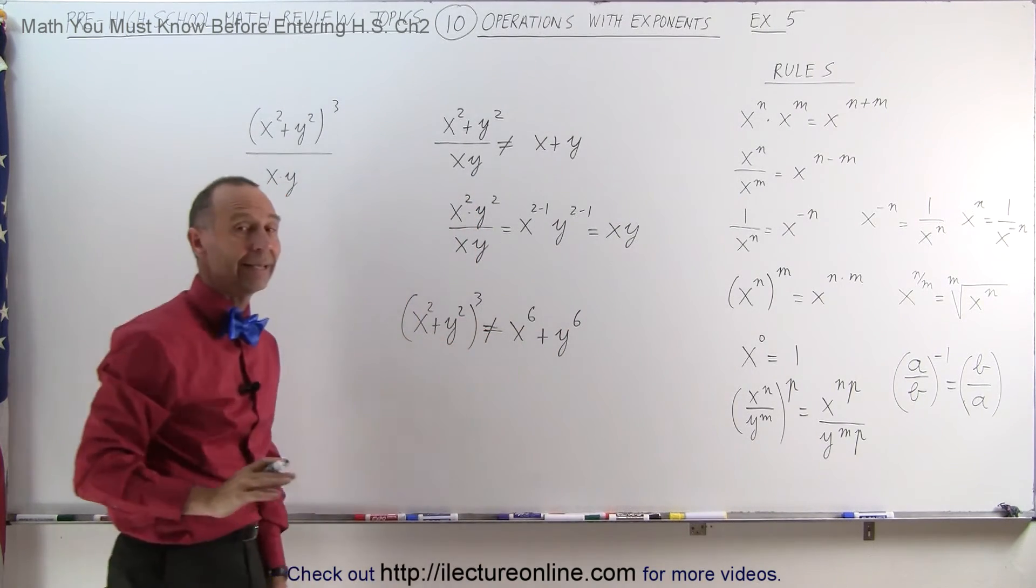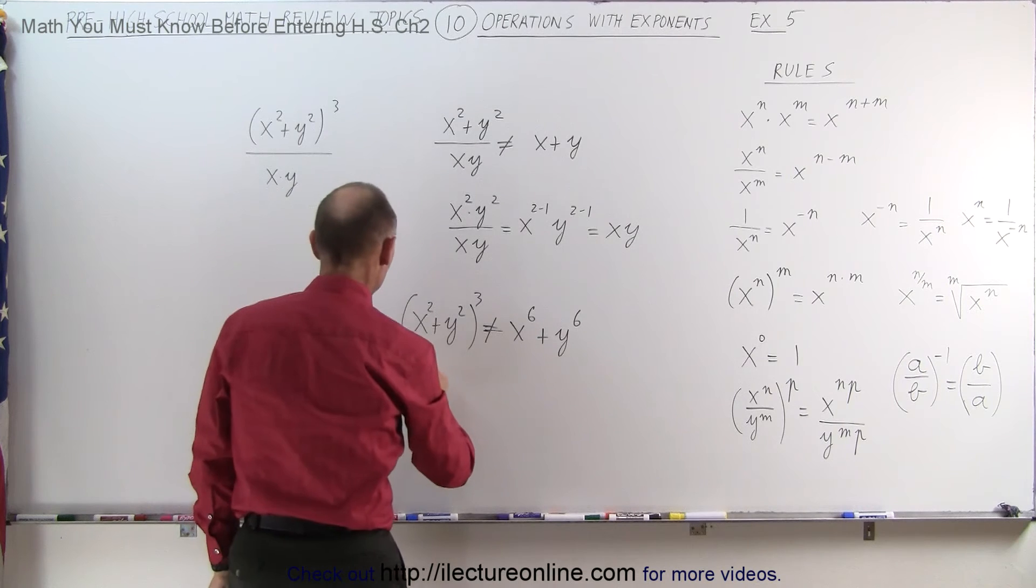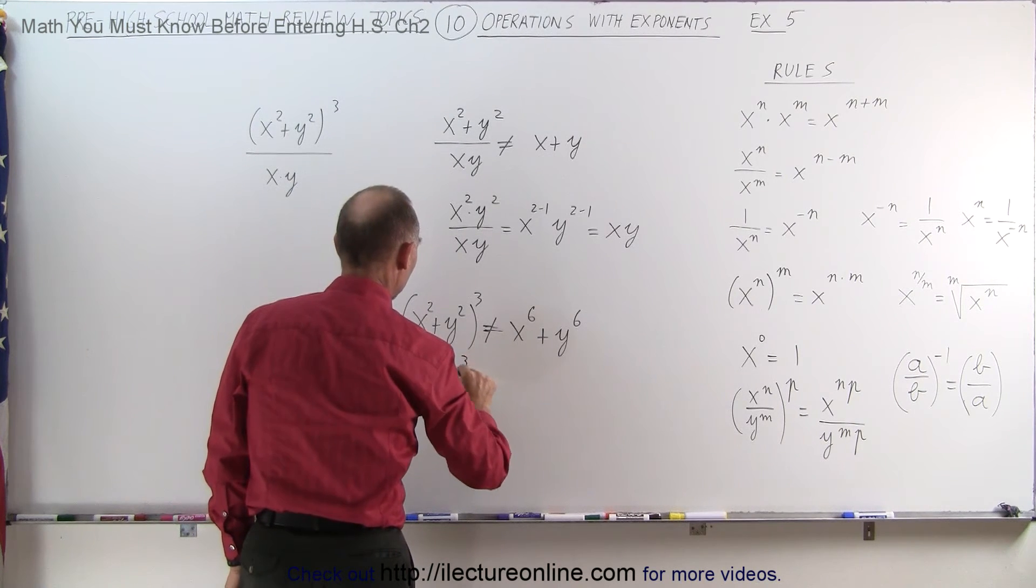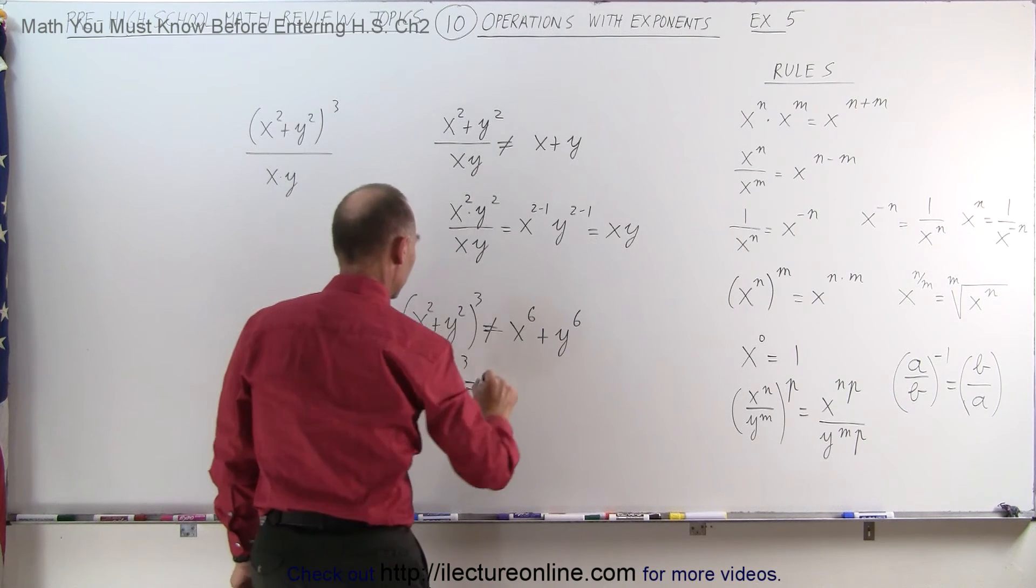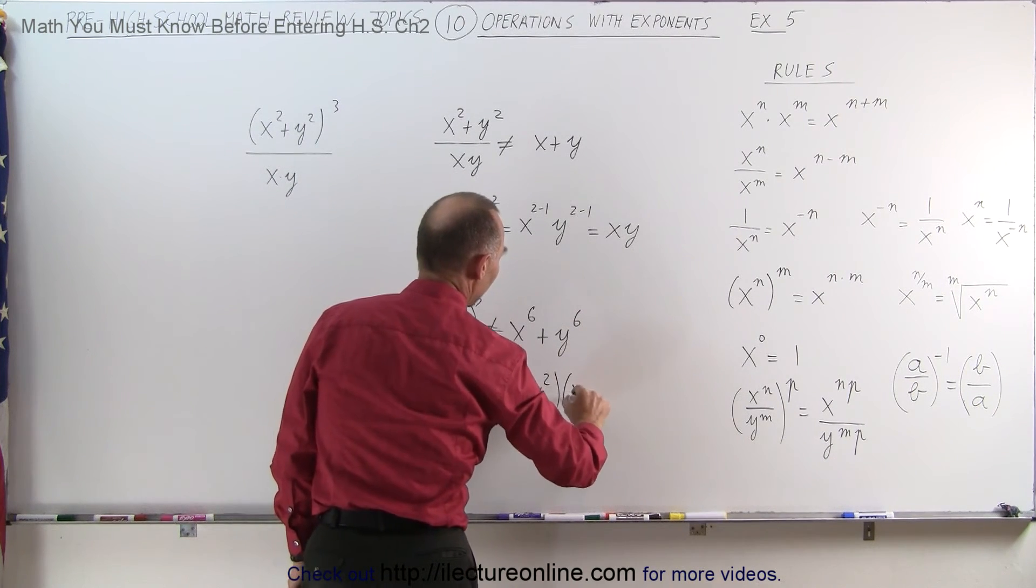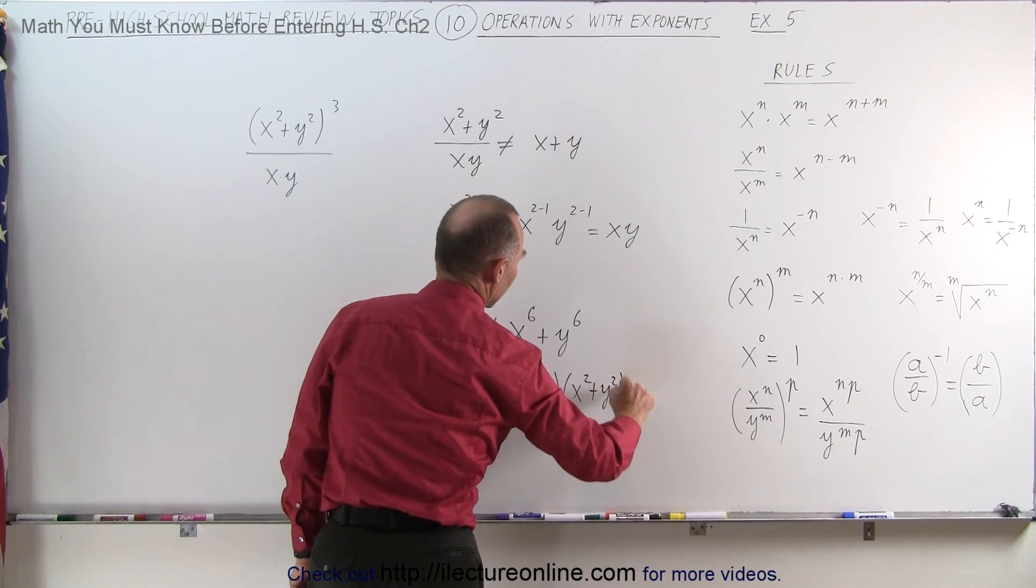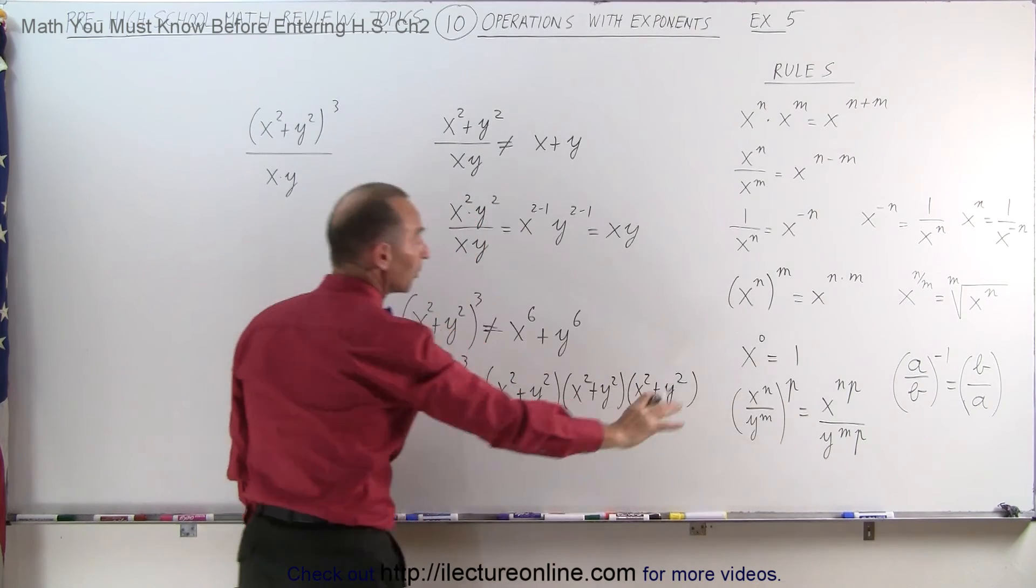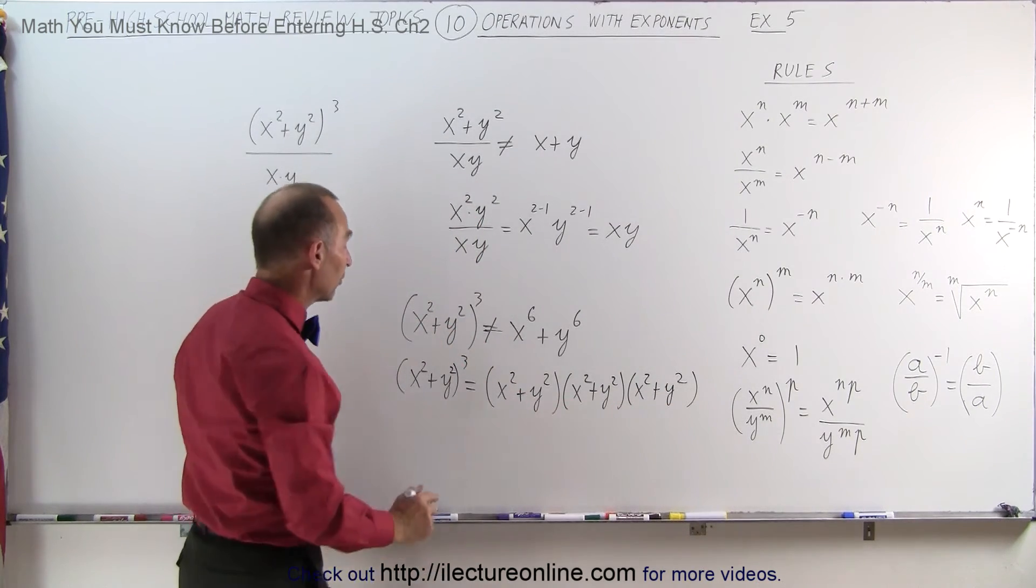You cannot do that. Instead, what this looks like is as follows. This is x squared plus y squared to the third power, which is equal to the quantity x squared plus y squared times x squared plus y squared times x squared plus y squared. And if you want to multiply this even further, it would become as follows.